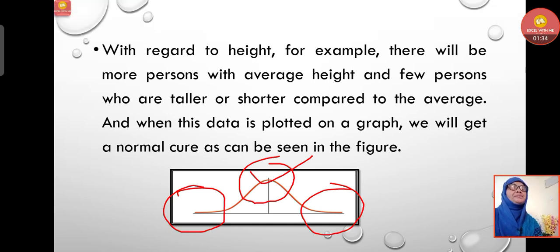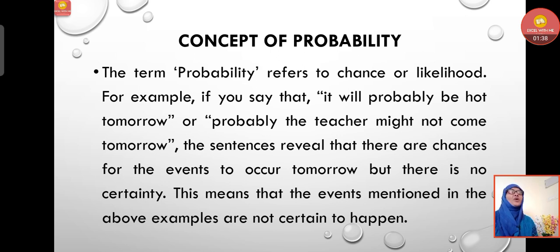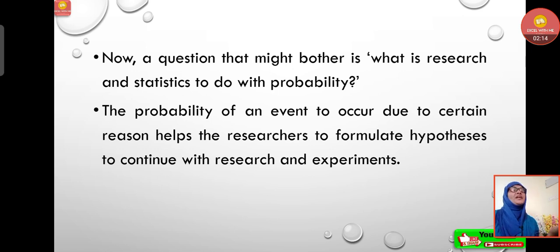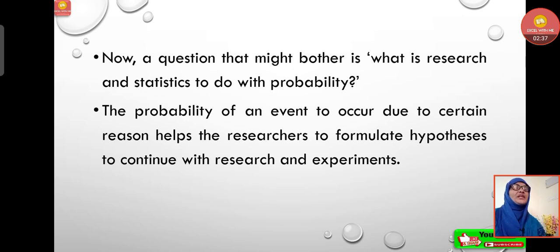Now the concept of probability: the term probability refers to chance or likelihood. For example, if you say it will probably be hot tomorrow, or probably the teacher might not come tomorrow, these sentences reveal that there are chances for the events to occur but no certainty. The events mentioned are not certain to happen — there is a probability they may or may not occur. The probability of an event occurring helps researchers formulate hypotheses to continue with research and experiments.